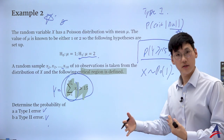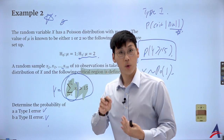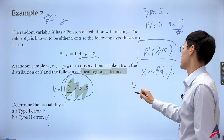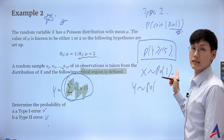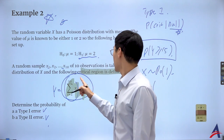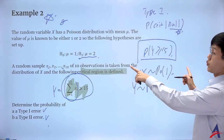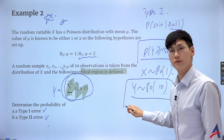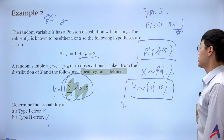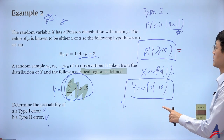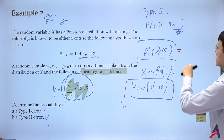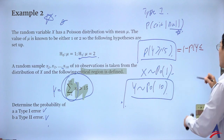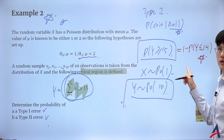The sum of independent Poisson random variables preserves the Poisson distribution — but only the sum, not a linear combination. So Y, the sum of 10 such variables each with mean 1 under the null, is Y ~ Poisson(10). For the type 1 error I compute 1 - P(Y ≤ 14), since this is a discrete random variable and I need to go up to only 14.